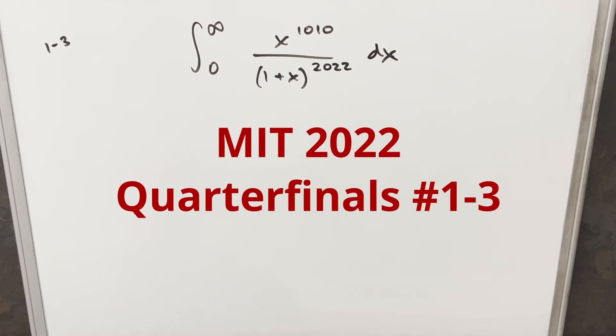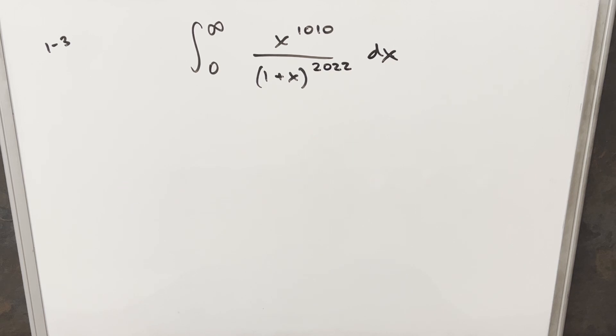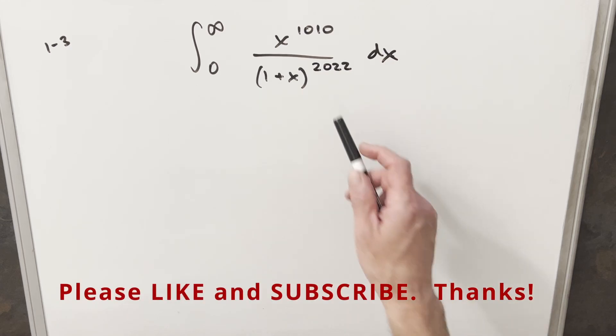Hey, we have here another integral on the board. This one's from the MIT Integration Bee 2002. This is from quarterfinals round one, problem three. We have the integral from zero to infinity of x to the 1010 over 1 plus x to the 2022 dx. They always manage to do that and sneak the year into the problem. I kind of like that.